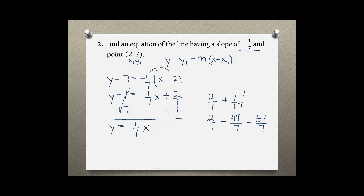We should always check if we can reduce the final fraction. In this case 51 is a prime number, so this stays as 51 over 7. Filling it in, we have our equation of the line with slope negative 1 over 7 passing through the point (2, 7).